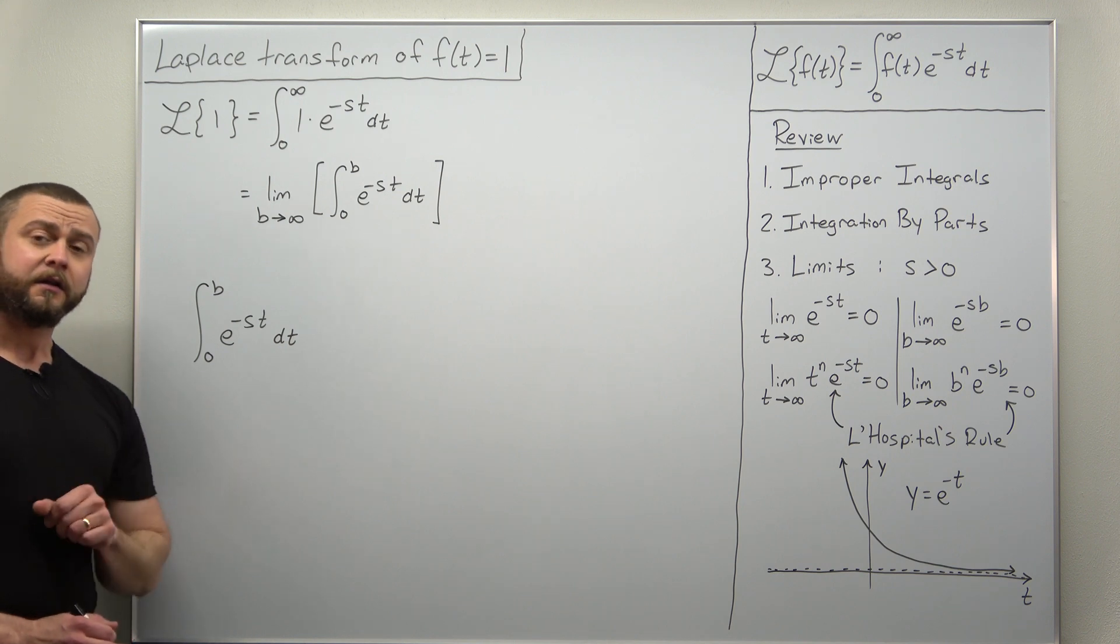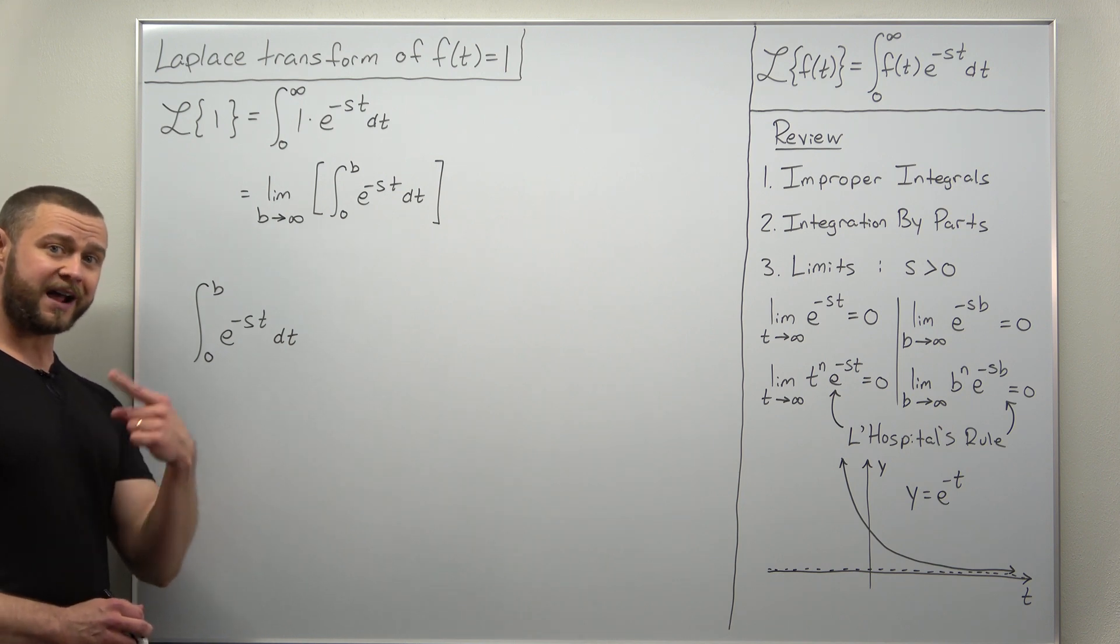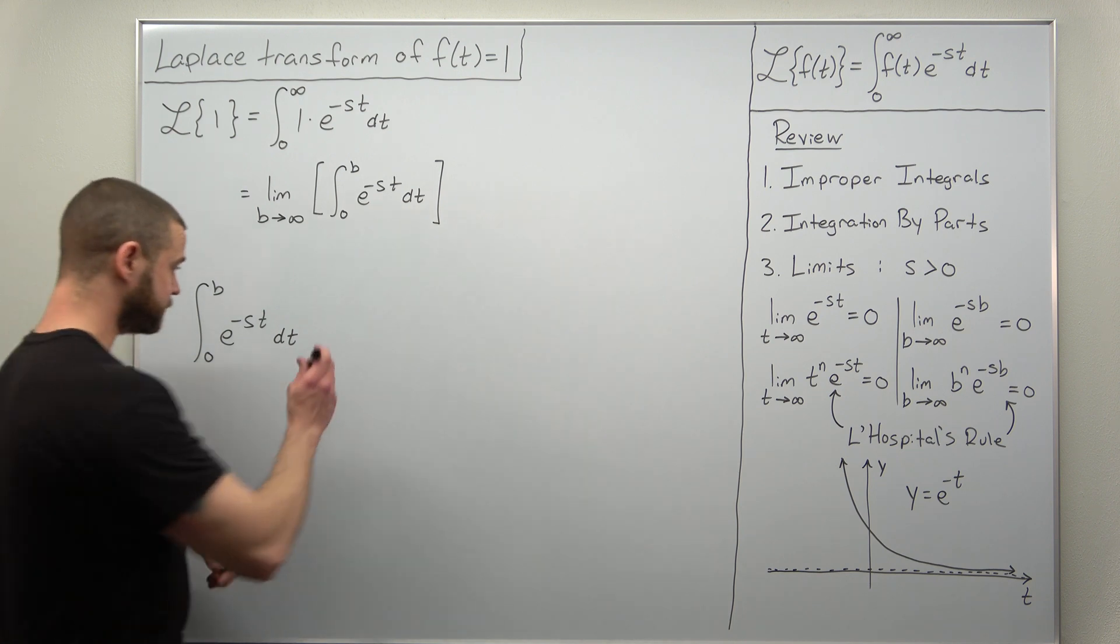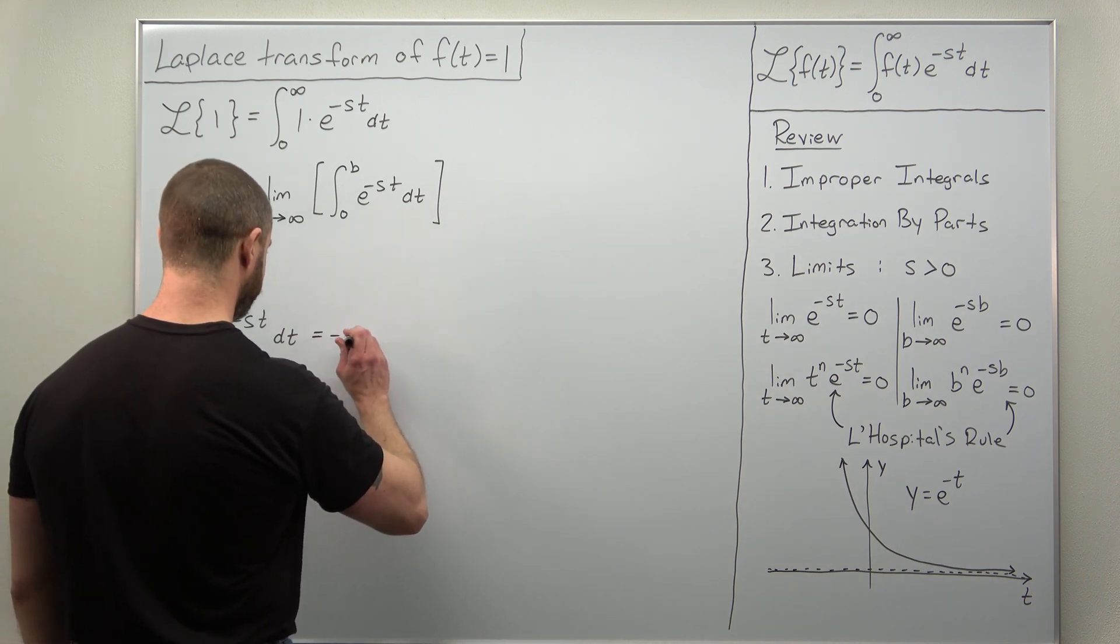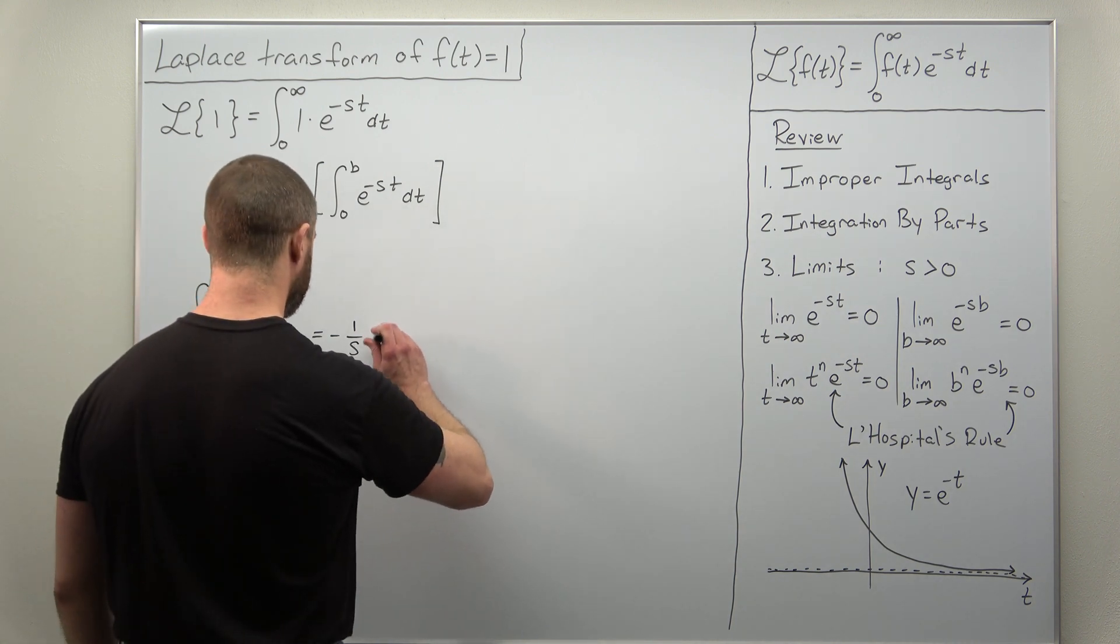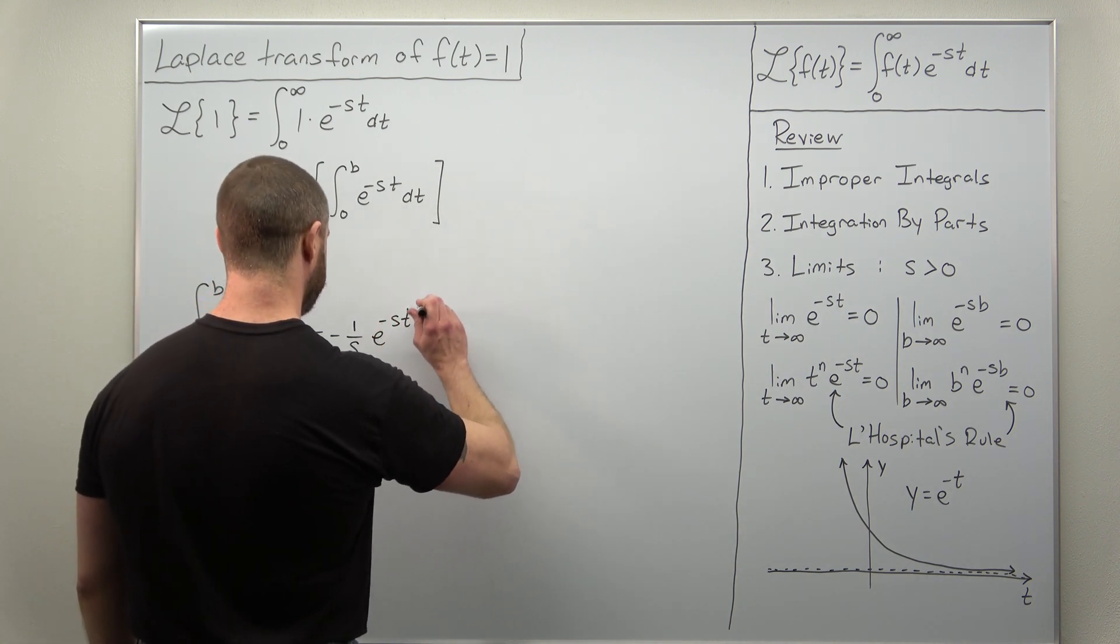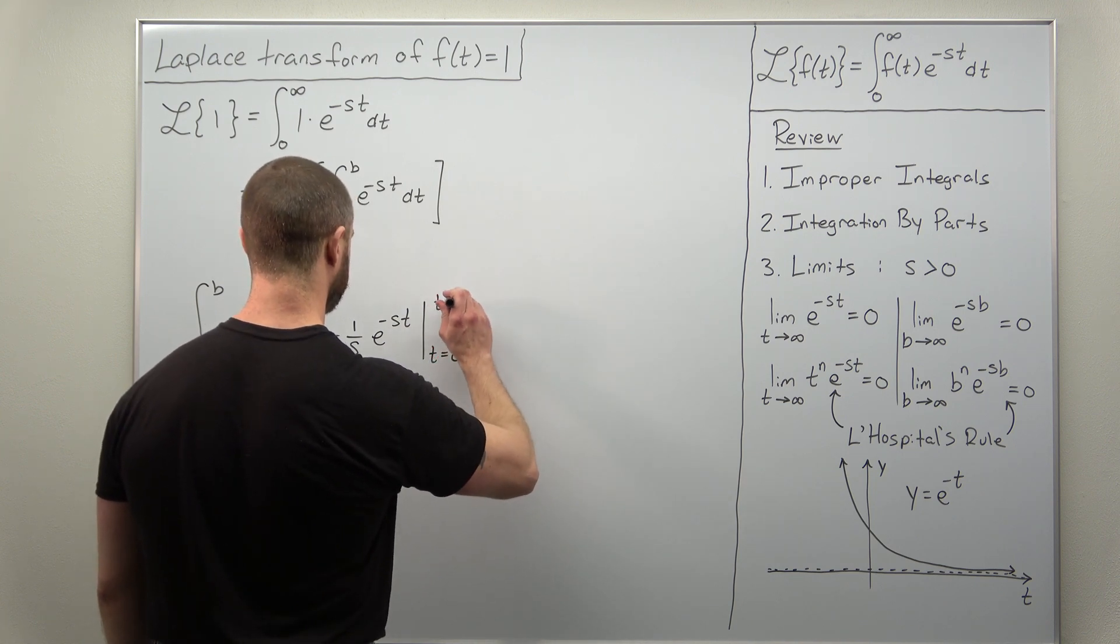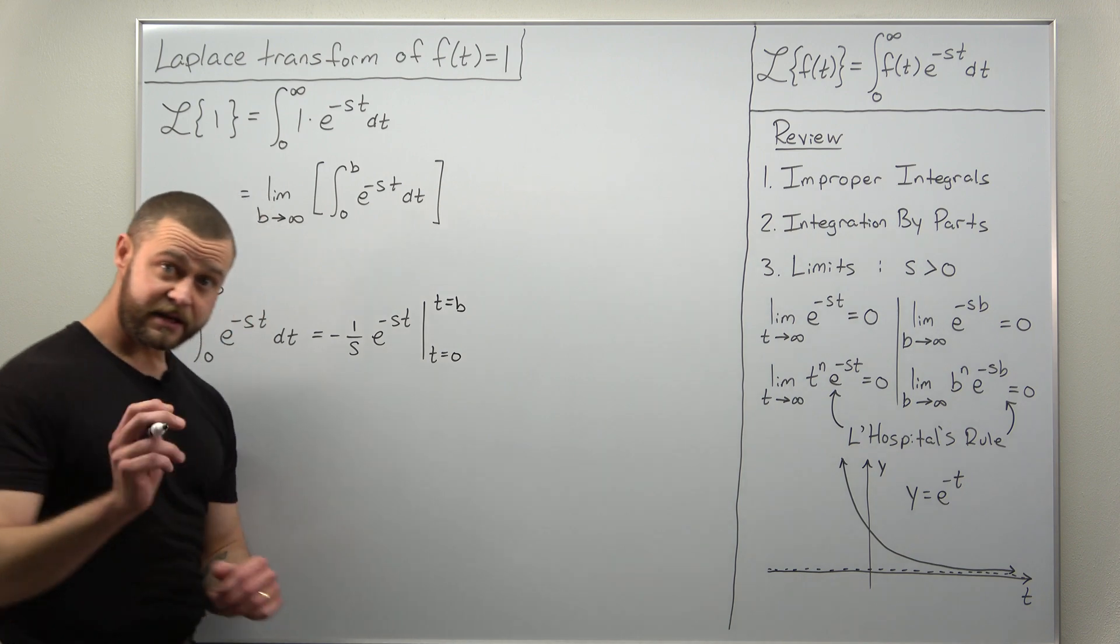Here a, the number or quantity multiplying your variable t, is negative s. Either way, your anti-derivative should come out to negative one over s e to the negative st, and we're going to evaluate that from t equals zero to t equals b.